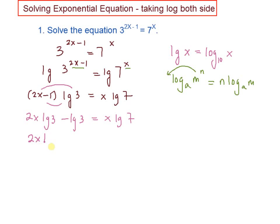Group all your x terms on one side. You have 2x log 3 here. Bring over minus x log 7 equal to positive log 3.